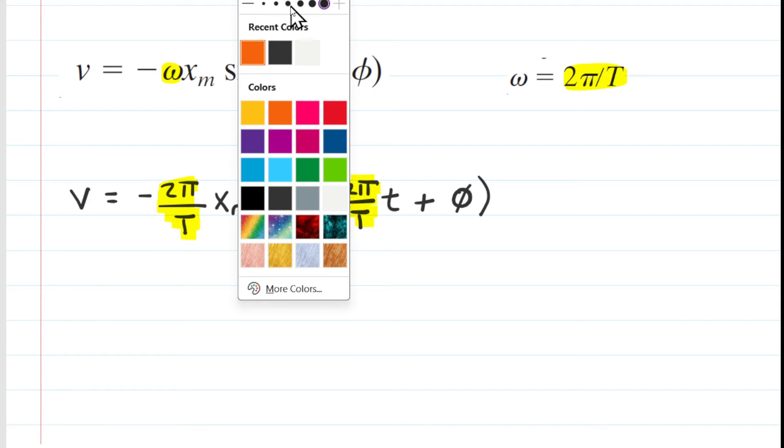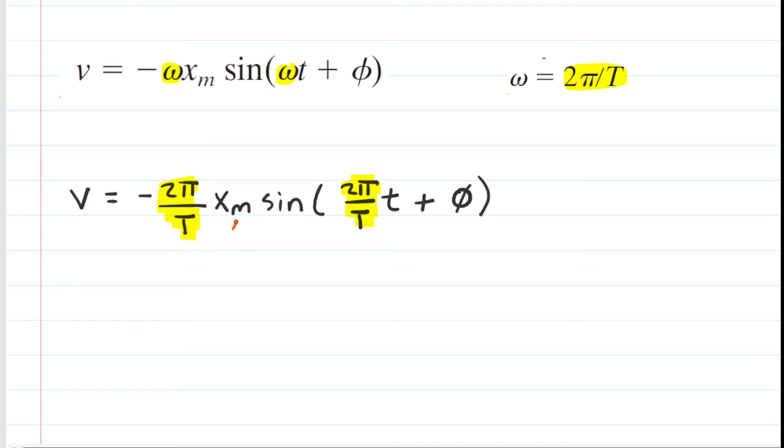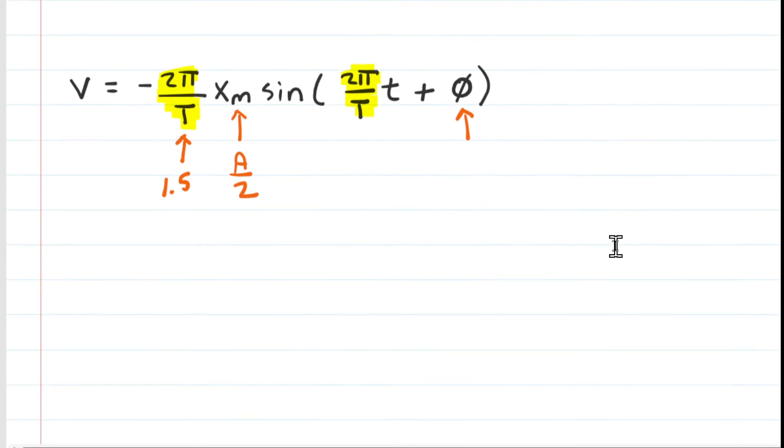Let's not forget that this x sub m for both particles was capital A divided by 2. This value of the phase angle was zero for particle 1 and π/6 for particle 2. And then the period for both of these was 1.5 seconds. So let's set up the two equations for each particle's velocity.